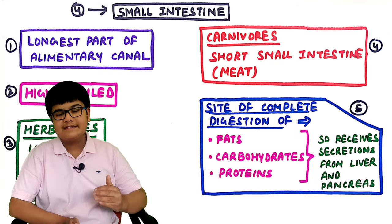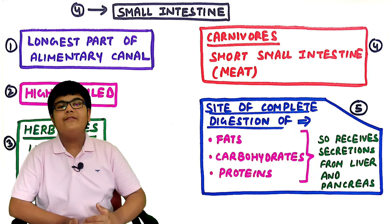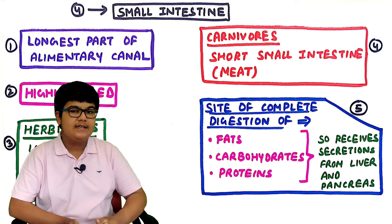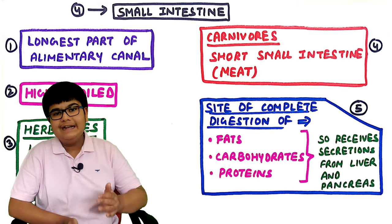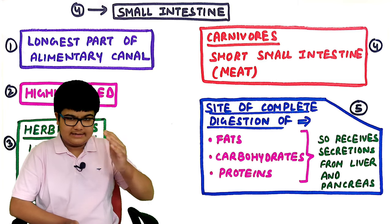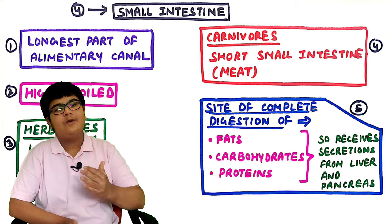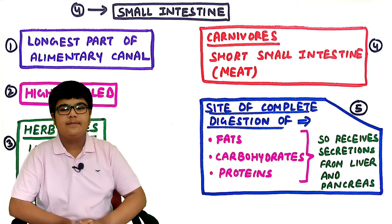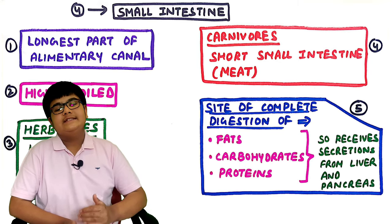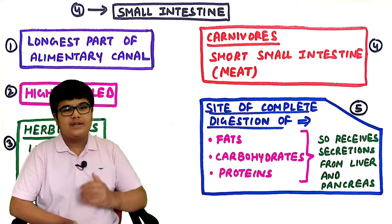The small intestine is the site of complete digestion of fats, carbohydrates, and proteins. It receives secretions from the liver and pancreas.